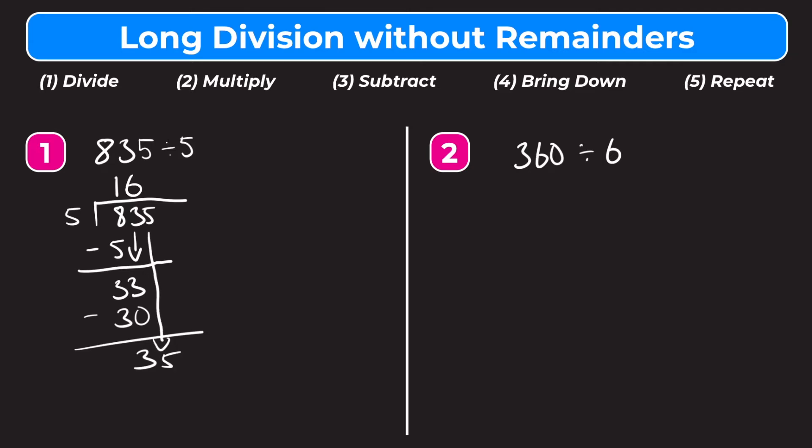We repeat and ask how many whole groups of 5 go into 35 — that would be 7. Write the 7 up top. 7 times 5 is 35, subtract: 35 minus 35 is 0. We've gone all the way to the ones place in our dividend, so we're done. The answer to 835 divided by 5 is 167.